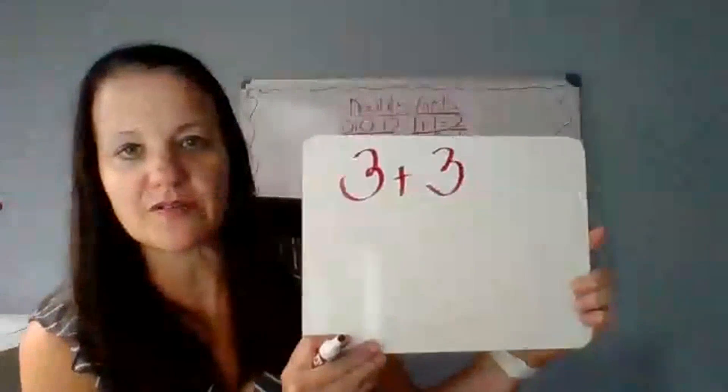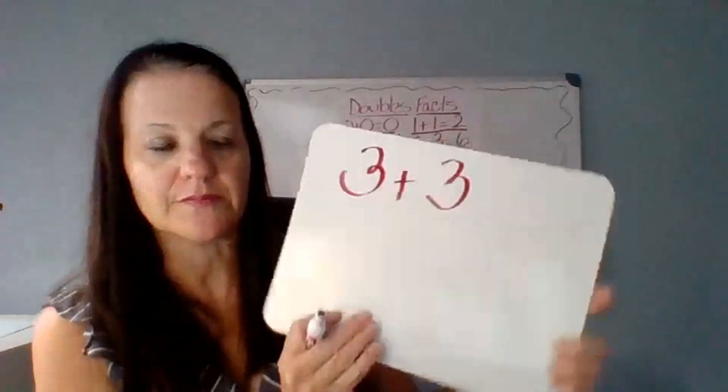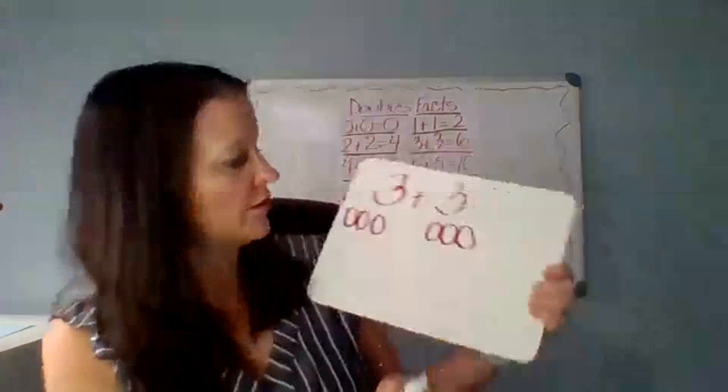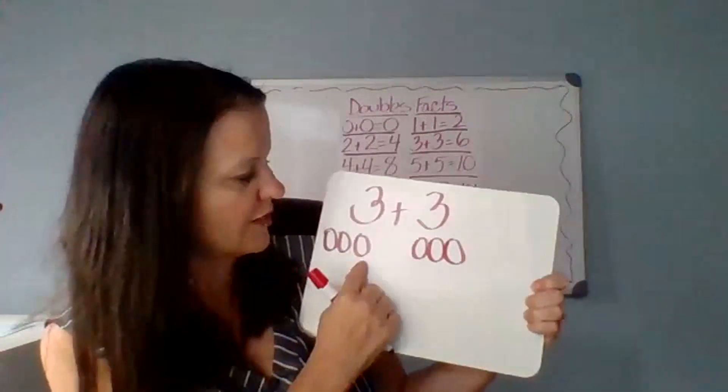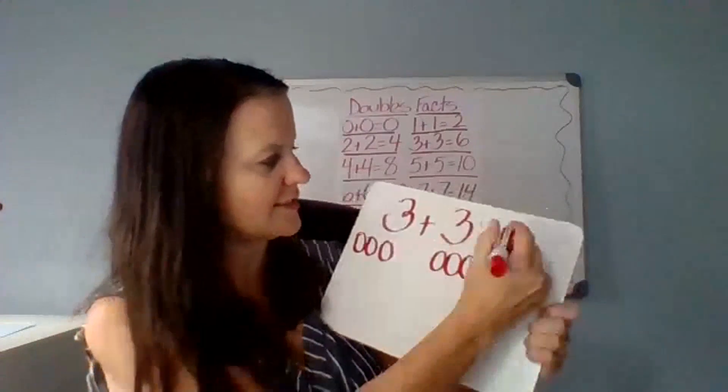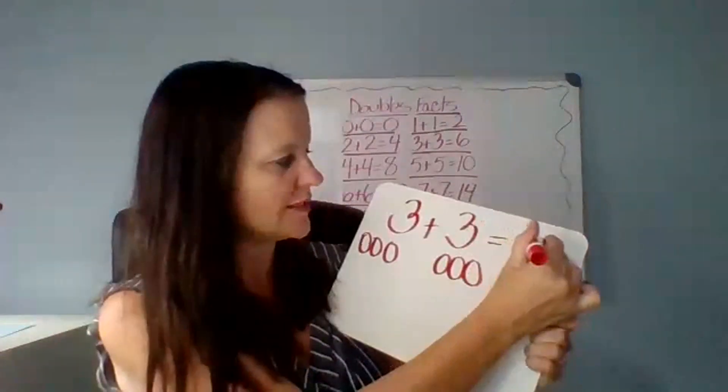Now number two: three plus three. Let's write that on your board — three plus three. Now let's draw our circles: one, two, three — and one, two, three. Ready? Let's add them up: one, two, three, four, five, six. The answer is six.